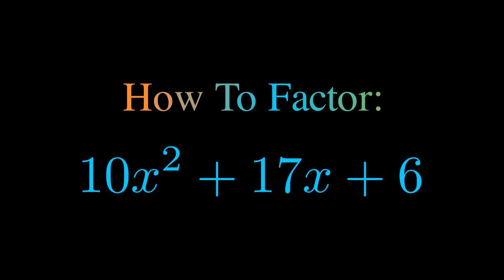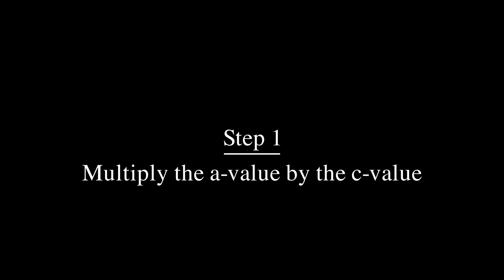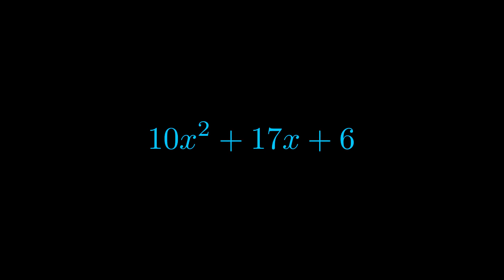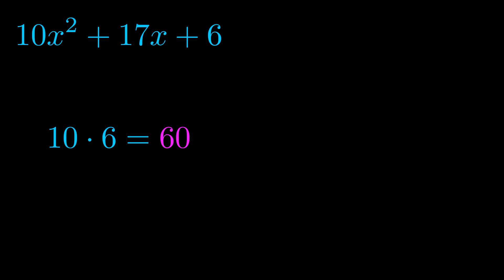In this video we're going to learn how to factor this equation. Step one when factoring an equation of this form is to multiply the a value by the c value. Here we can see that our a value is the coefficient on the x² term and our c value is the constant term. When we multiply these two values we get this value here in magenta.